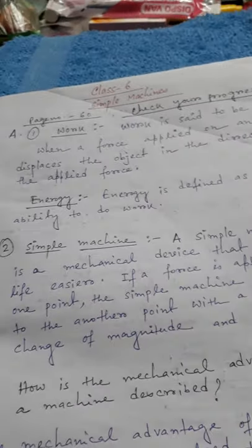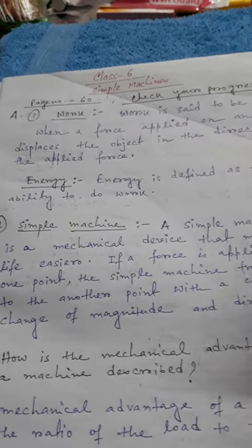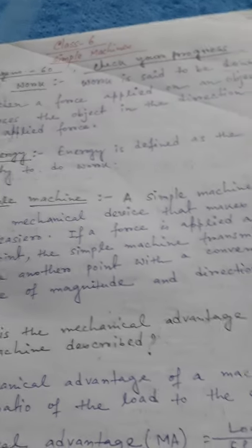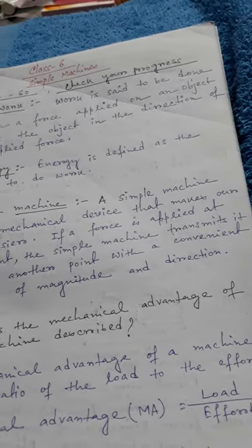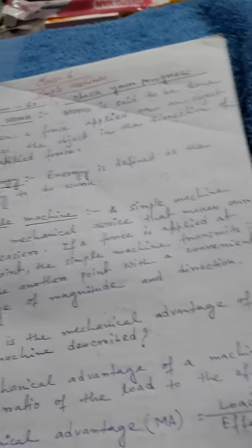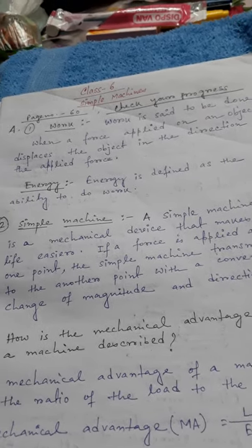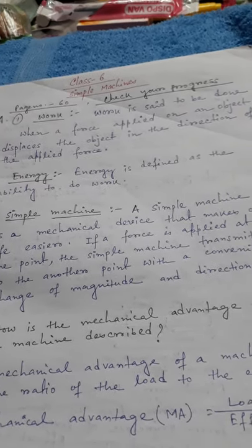Question number 2: what do you understand by the term simple machine? A simple machine is a mechanical device that makes our work easier or makes our life easier. If a force is applied at one point, the simple machine transmits it to another point with a convenient change of magnitude and direction.